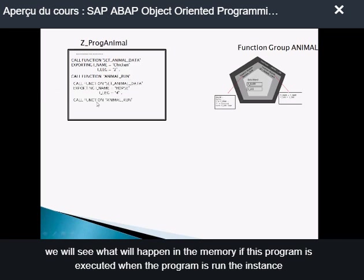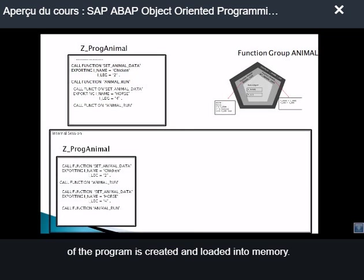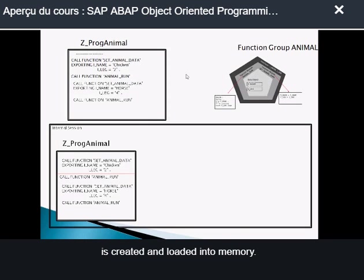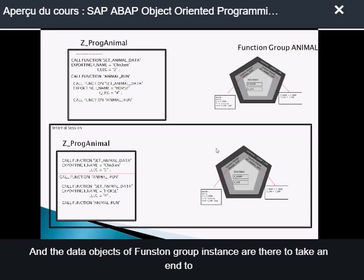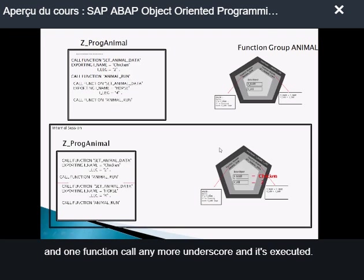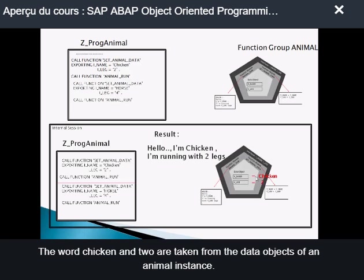We will see what happens in memory when this Z-program is executed. When the Z-program runs, the instance of the Z-program is created and loaded into memory. When function module set_animal_data is run, the whole function group animal is created and loaded into memory, and the data objects of the function group instance are set to 'chicken' and 'two'. When function call animal_run is executed, the result will be: 'Hello, I'm chicken, I'm running with two legs.' These values are taken from the data objects of the function group animal instance.